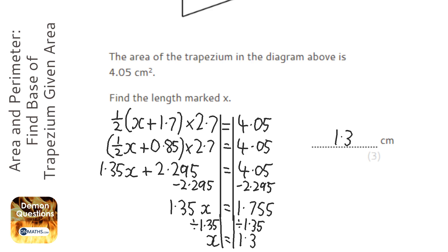There are different ways of doing that. I could have divided both sides by 2.7, then times both sides by 2 at the start, and taken away the 1.7—that probably would have been easier. But I thought this might have been easier to show.